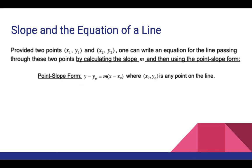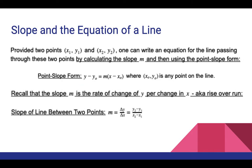To convert to slope-intercept form is something we'll cover in a second. Recall that the slope m is the rate of change of y per change in x, a.k.a. rise over run. It tells us for a certain change in x, how much y changes for our line. So the slope of a line between two points is m equals delta y over delta x, or y2 minus y1 over x2 minus x1. You need to know this equation and be familiar with what the slope represents, as slope is of fundamental importance to calculus.